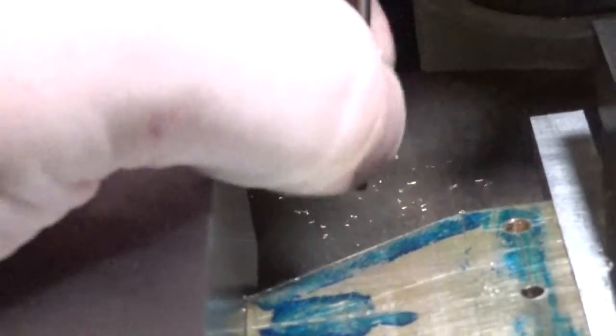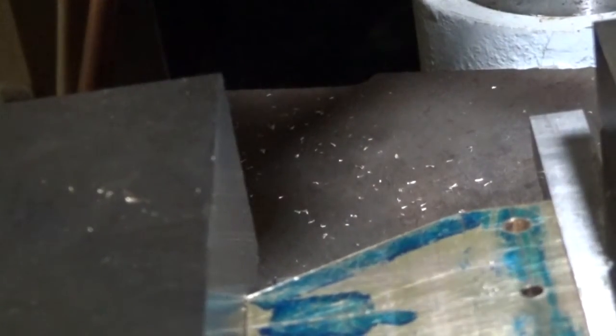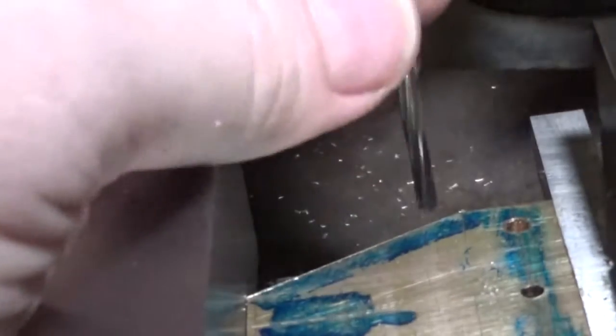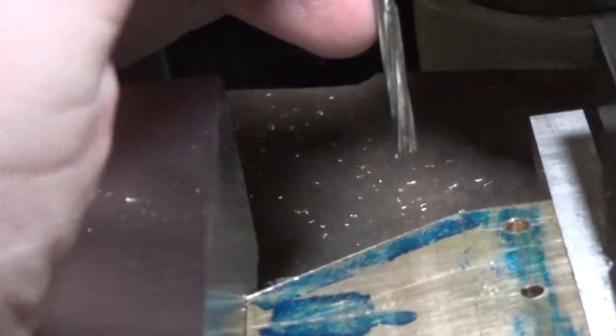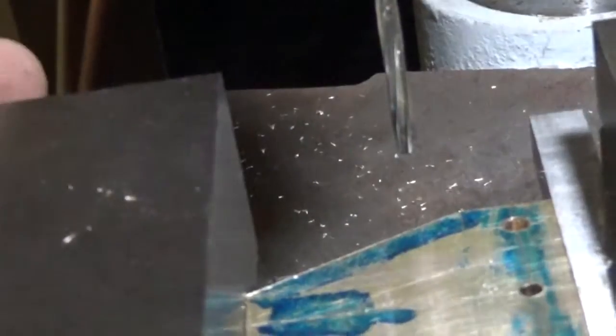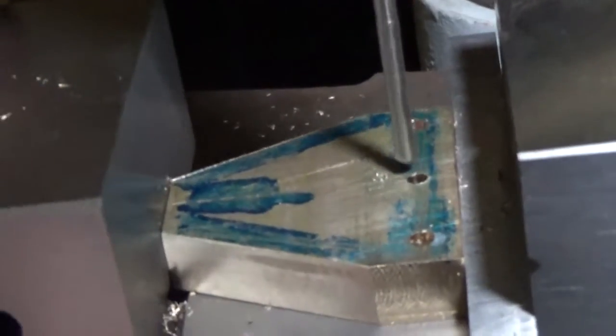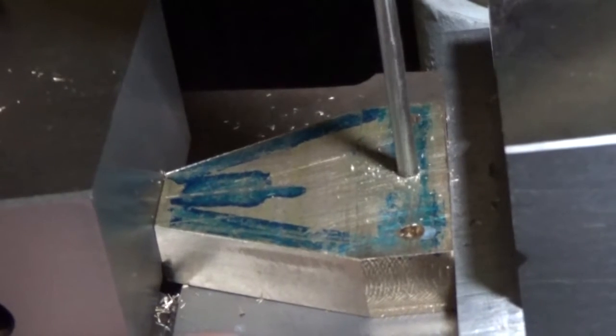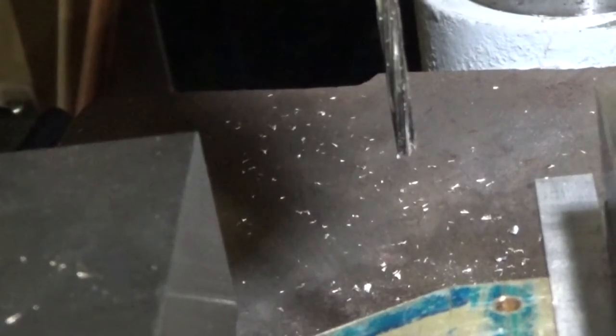So the reamer I've got is 3 millimeters and that'll be nice. So I've run a number 34 drill through there, which should be just nicely undersized. Then chucked up 3 mil reamer and run that through too. So now we've got a nice reamed dowel hole, nice and square hopefully. We'll put that away.